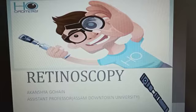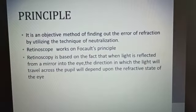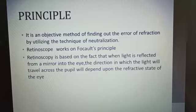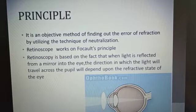Retinoscopy is a technique of objective refraction, mainly to find out the refractive error by using the technique of neutralization with the help of an instrument called retinoscope. This instrument works on the principle of focal principle. Retinoscopy is mainly based on the fact that when light is reflected from a mirror into the eye, the direction in which the light will travel across the pupil will depend upon the refractive state of the eye.